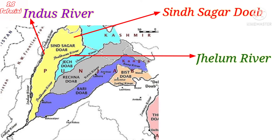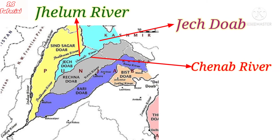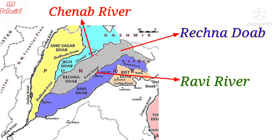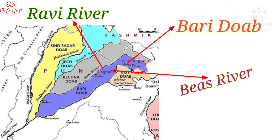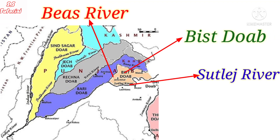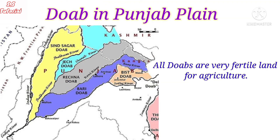The five doabs are: the Sindsagar doab, made by the Indus and Jhelum rivers; the Jech doab, made by the Jhelum and Chenab rivers; the Rechna doab, made by the Ravi and Chenab rivers; the Bari doab, made by the Beas and Ravi rivers; and the Bist doab, made by the Beas and Satlej rivers. These doabs are very fertile land, which is why Punjab is agriculturally very rich.